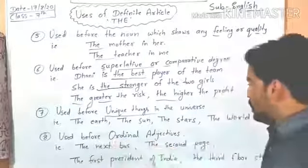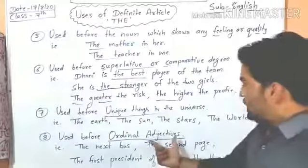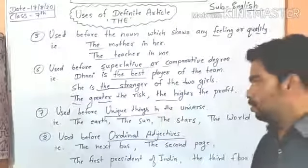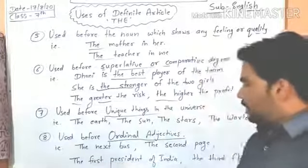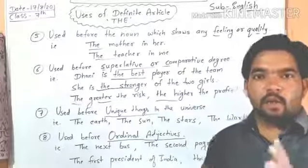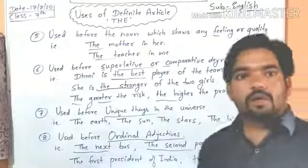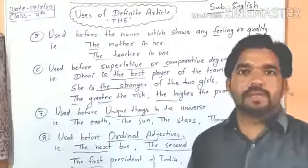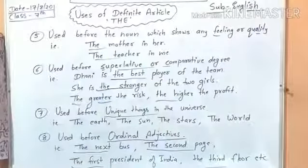The eighth use: 'the' is used before ordinal adjectives — क्रमवाचक विशेषण। For example: 'The next bus' — अगली bus, 'the second page,' 'the first president of India,' 'the third floor' — तीसरी मंजिल। पहला, दूसरा, तीसरा — these are ordinal adjectives, and 'the' is used before all of them.